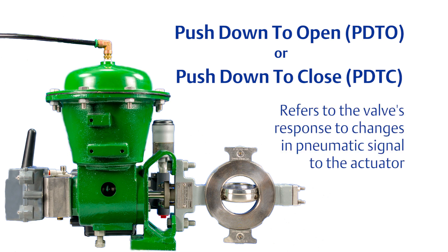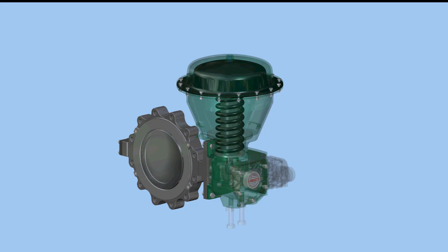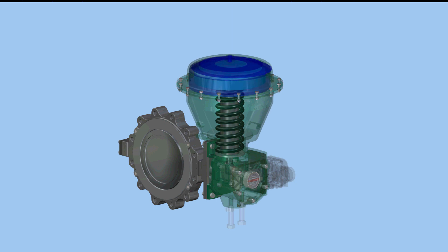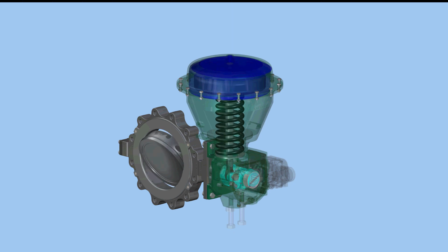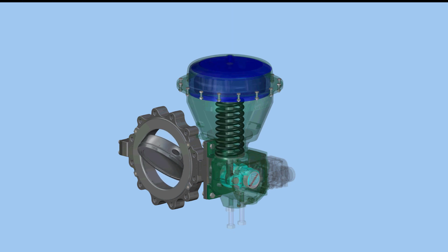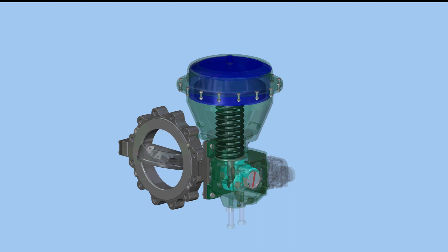This refers to the valve response to changes in the pneumatic signal to the actuator. In this example, a control valve with a spring and diaphragm actuator is configured for push down to open. As increasing pneumatic pressure moves the diaphragm, diaphragm plate, and actuator stem down to rotate the lever, the drive shaft rotates the valve into the open position.